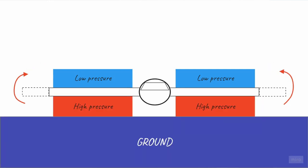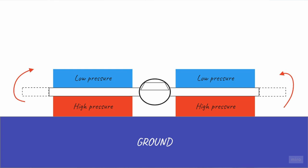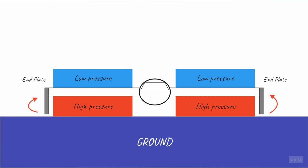When a wing gets closer than span width away from the ground, something starts to happen. The vortex is flattened as the wing gets closer to the surface. This flattening slows down the air escaping to the top, and it essentially makes the wings appear longer and more slender, decreasing the induced drag. This effect can be increased even more by putting end plates on the tip of the wings, essentially stopping the air from escaping over the tips to the top of the wing.